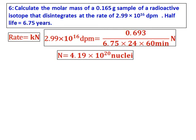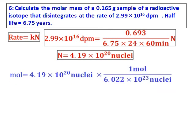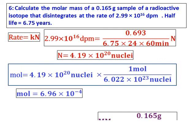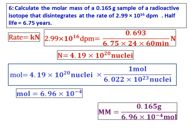Get the value of N. This is the number of nuclei we have. Convert it into moles by dividing it by Avogadro's number, and once we get the moles of nuclei, the mass of the sample is given. Molar mass can be calculated.